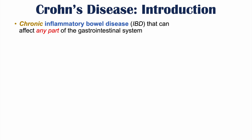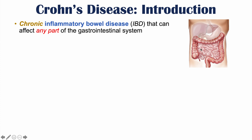Crohn's disease is a chronic inflammatory bowel disease, or IBD, that can affect any part of the gastrointestinal system. Looking at the gastrointestinal system briefly: here is the esophagus, here is the stomach, and it leads into the small intestines, which wind around in the abdomen, eventually leading to the large intestine — the ascending colon, the transverse colon, the descending colon, and the sigmoid colon.